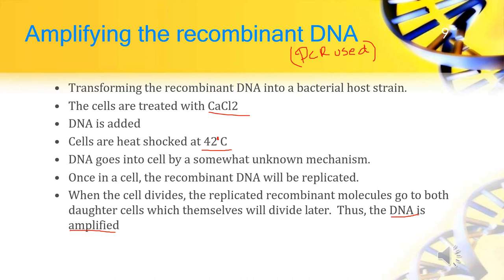Amplifying the recombinant DNA: PCR is a process to amplify a gene once the proper gene of interest has been cut. First, the recombinant DNA is transformed into a bacterial host. Cells are treated with CaCl₂ and DNA is added. After that, cells are heat-shocked at 42 degrees Celsius. DNA enters the cell by a somewhat unknown mechanism. Once inside the cell, the recombinant DNA will be replicated. When the cells divide, the recombinant molecules go to both daughter cells, which themselves will divide later — thus, the DNA is amplified.